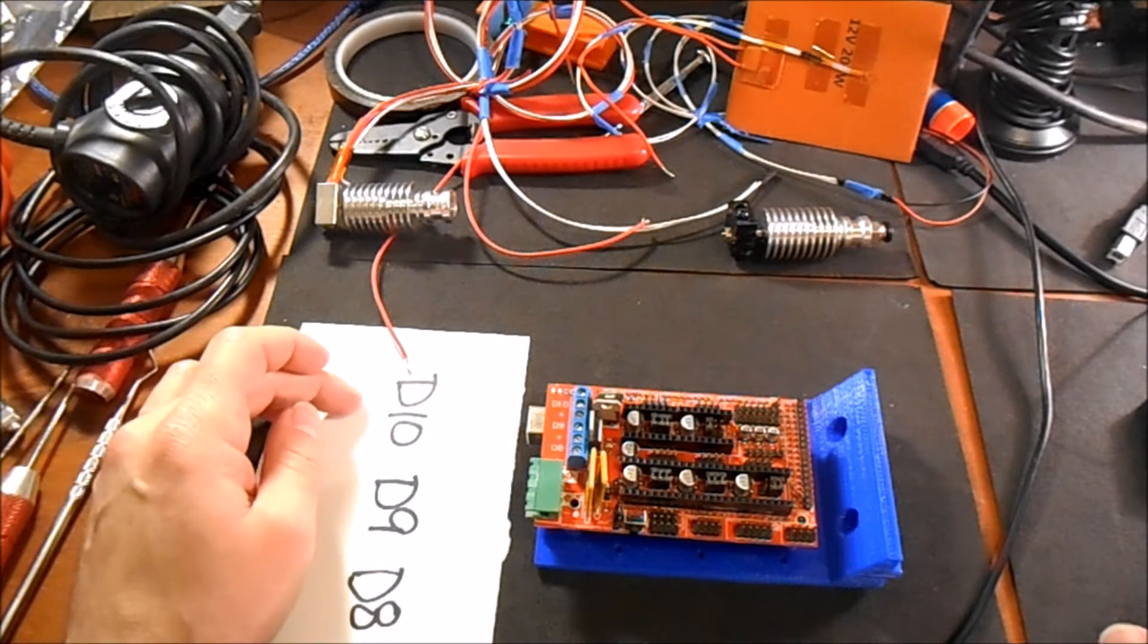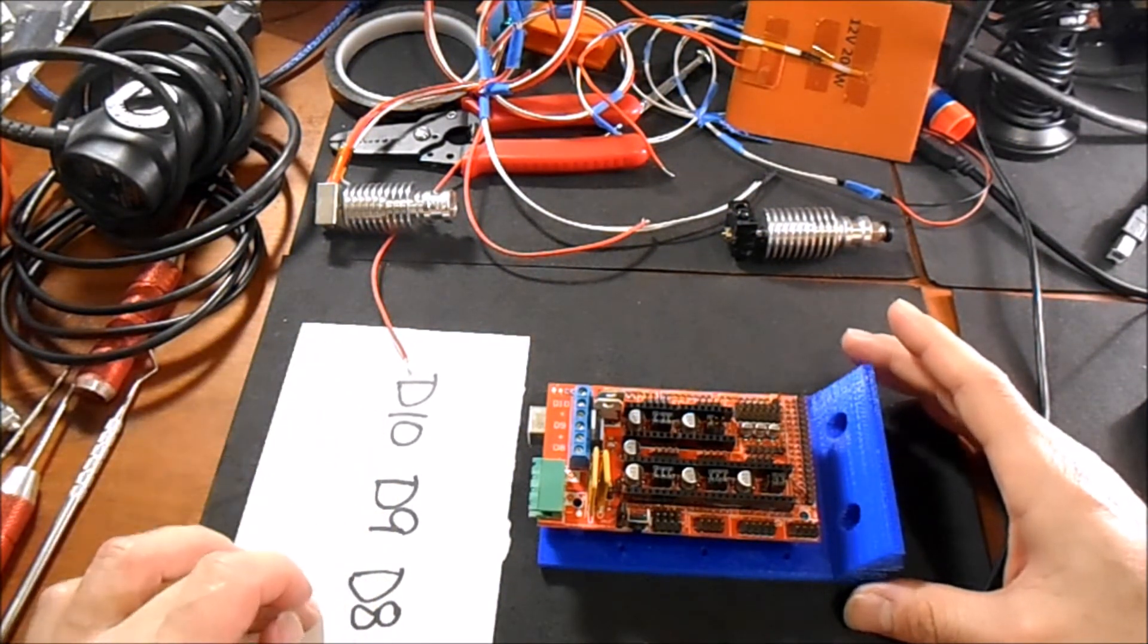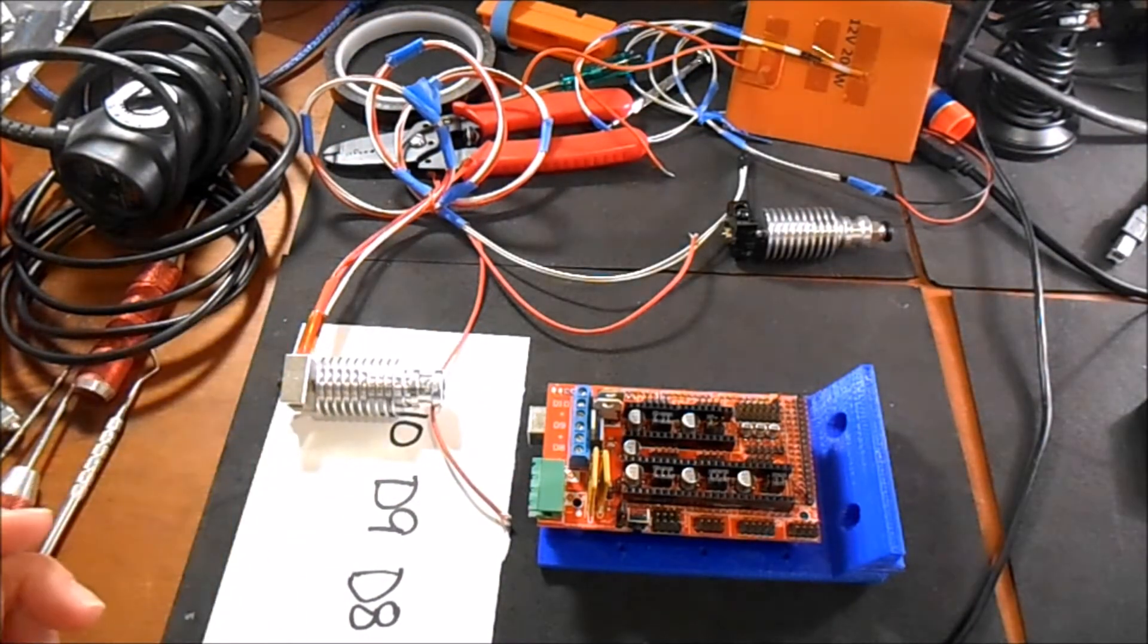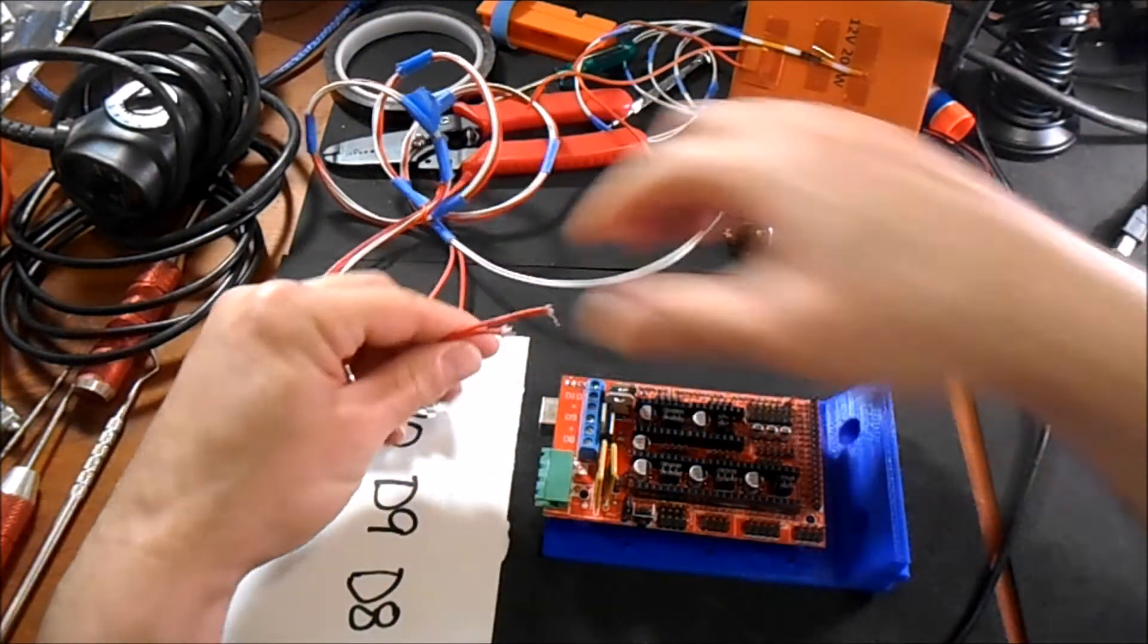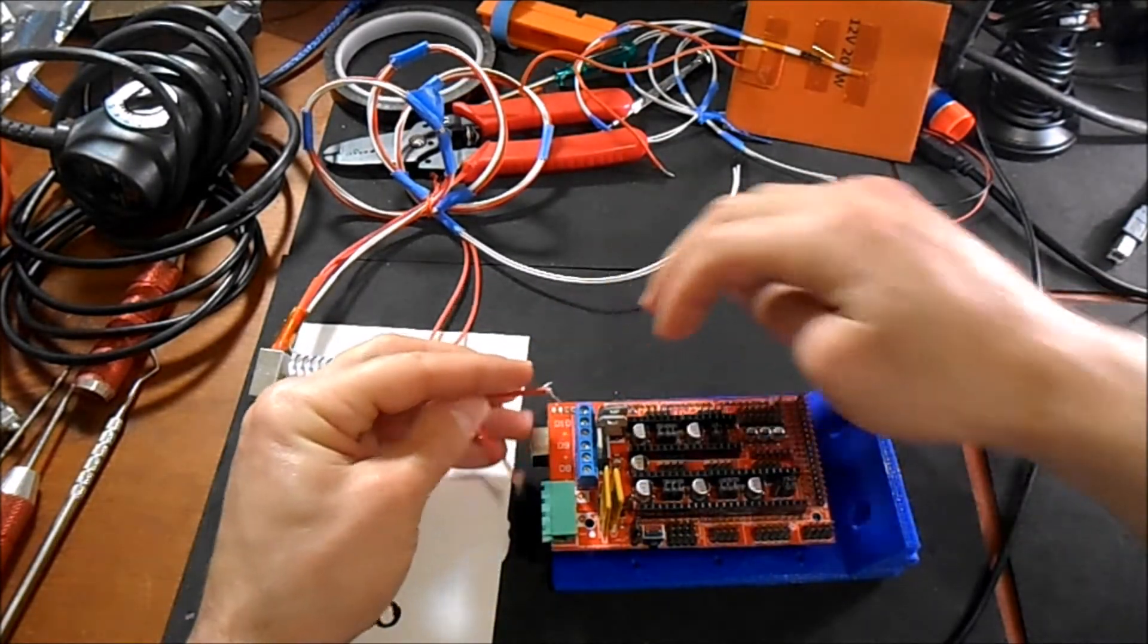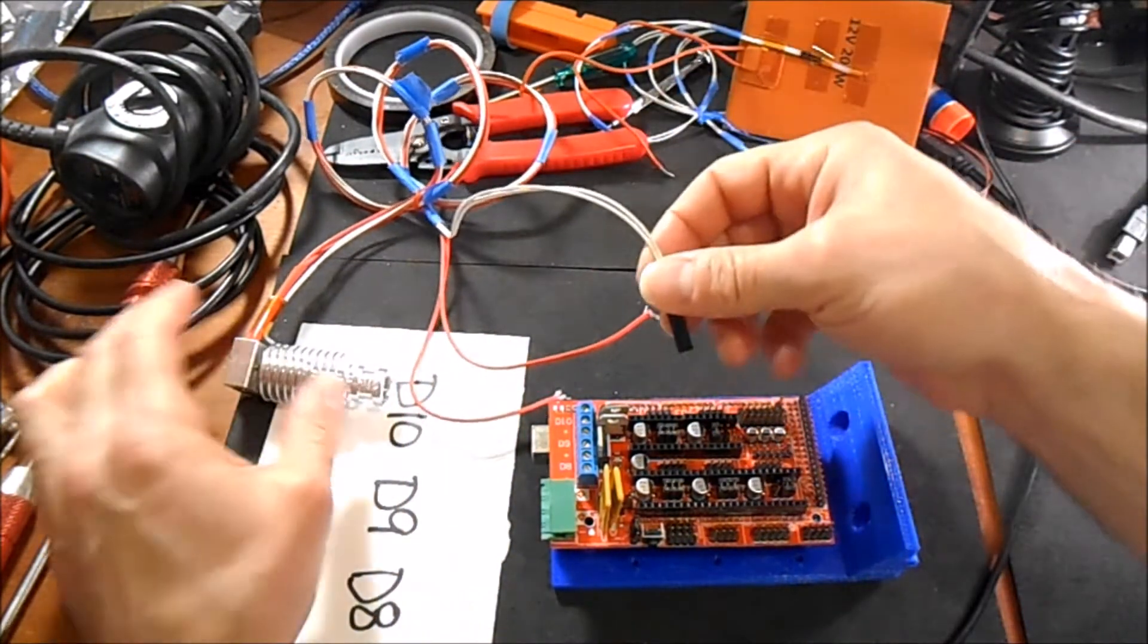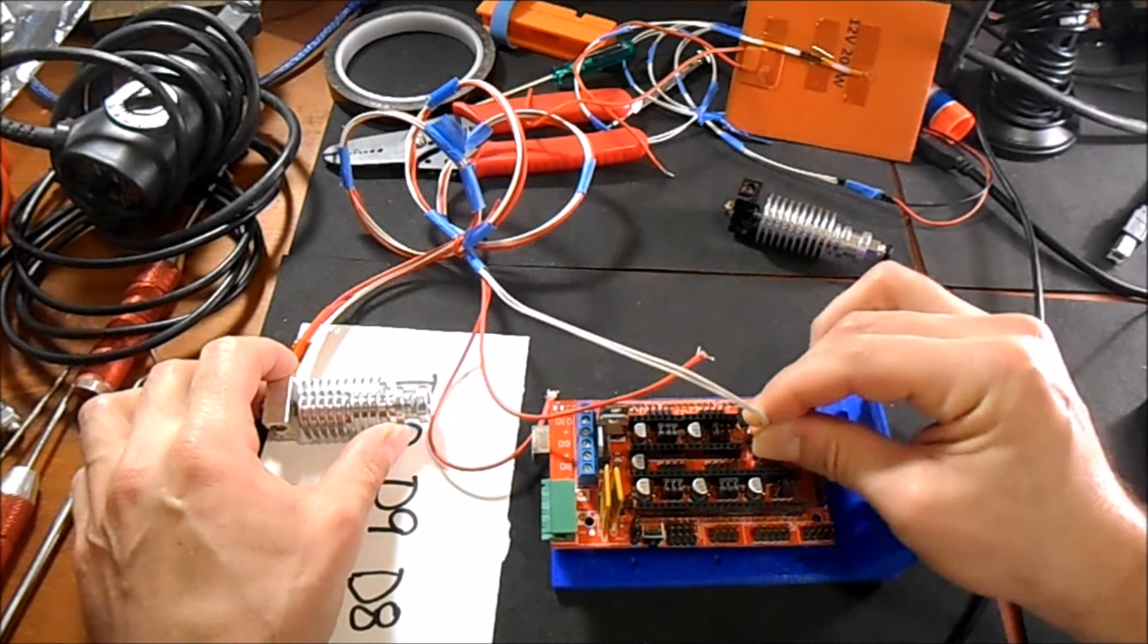Here's what the mock-up would look like for the board. We have D10, D9, and D8. The first configuration that we spoke about was the hotend, fan, and bed. For the hotend, you're going to take the wires for the heating element, and those are going to be put into your two connections for D10 and screwed down. Then you'll have a thermistor connection which will go on T0.